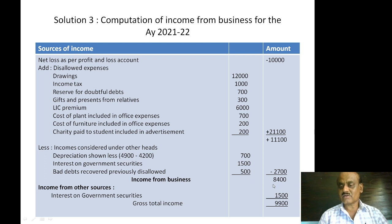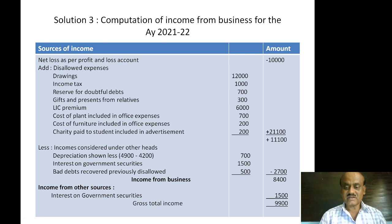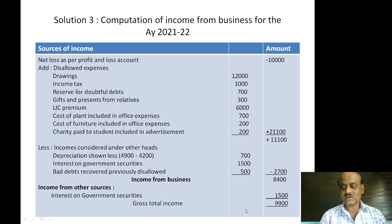Income from business is Rs.8,400. Then for gross total income: income from other source — interest on government security Rs.1,500. So Rs.8,400 plus Rs.1,500 equals Rs.9,900 as gross total income.